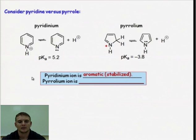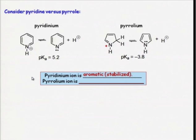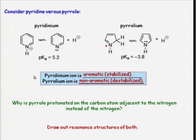So again, for the pyridine species, after protonation, the conjugate acid is still aromatic. And for the pyrrole conjugate acid, it has lost aromaticity because it no longer has a cyclic array of p orbitals to form for the aromaticity. And again, pyrrole is protonated on the carbon because the resonance contributors show that the carbon atoms all bear a partial negative charge and are thus more basic than the nitrogen.